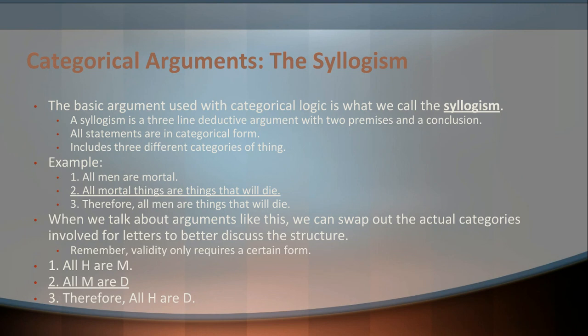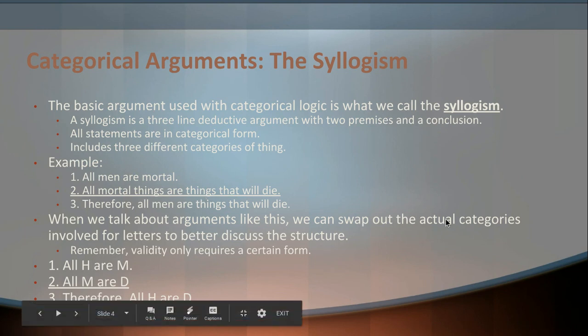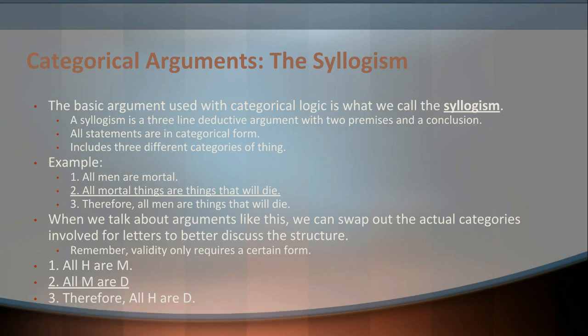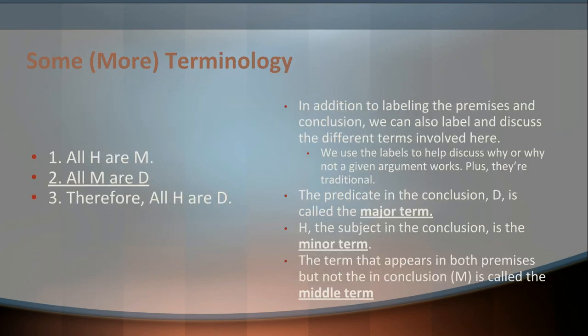If we swap out each of the different terms or categories with just a letter to represent it, we get something like: 'All H are M. All M are D. Therefore, all H are D.' This more formalized structure is useful because, in addition to labeling premises and conclusion, it makes the structure much more apparent and clear, and we can test for validity much more easily. So let's look at a bit of vocabulary and then see how we can use it to form some different rules for actually making valid syllogisms.